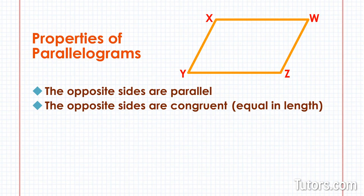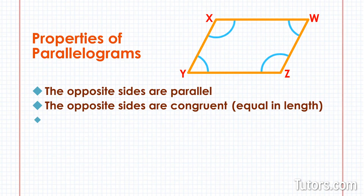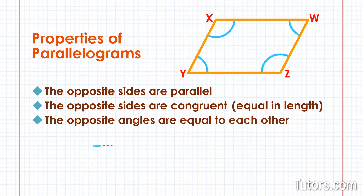Let's look at the angles of parallelograms. Consider the interior angles: angle W, angle X, angle Y, and angle Z. As with any quadrilateral, the interior angles add to 360 degrees. The opposite angles are equal to each other — angle W and angle Y are congruent, and angle X and angle Z are congruent. The two pairs are not necessarily congruent to each other, but they can be, as in a square or rectangle.